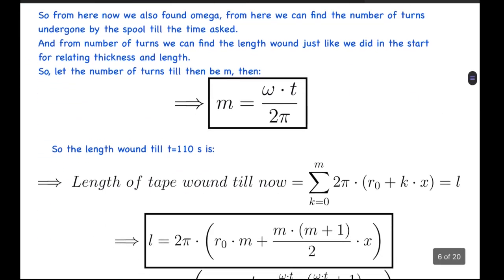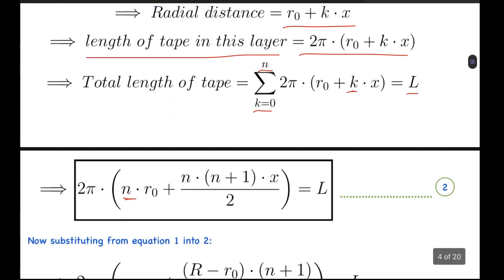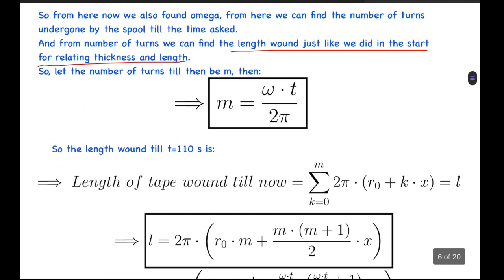From here now we also found omega. So from here we can find the number of turns undergone by the spool till the time asked, and from this number of turns we can find the length wound just like we did in the start for relating thickness and length. For example, like here we found the total length by summing over this. Similarly, we can find the length l wounded till time small t.